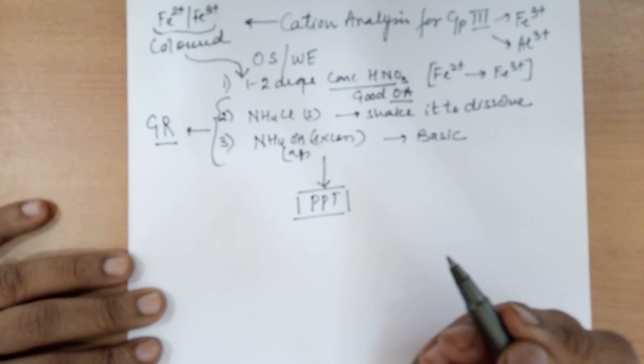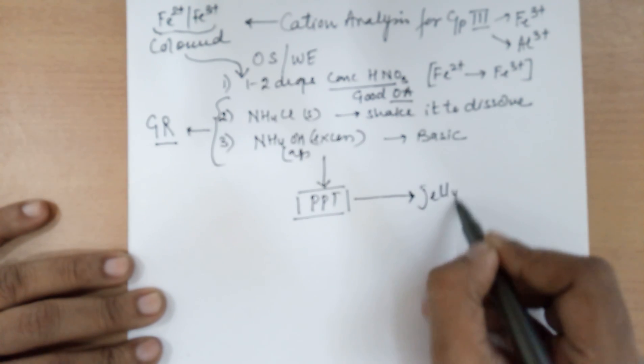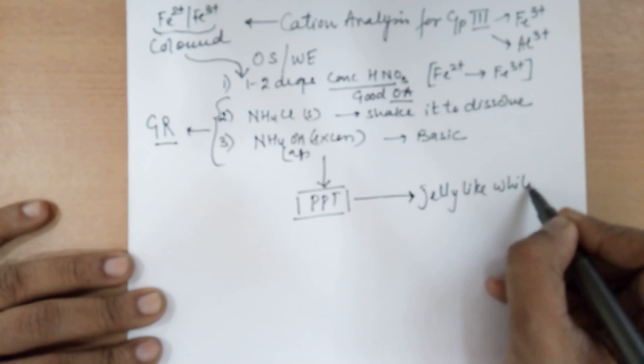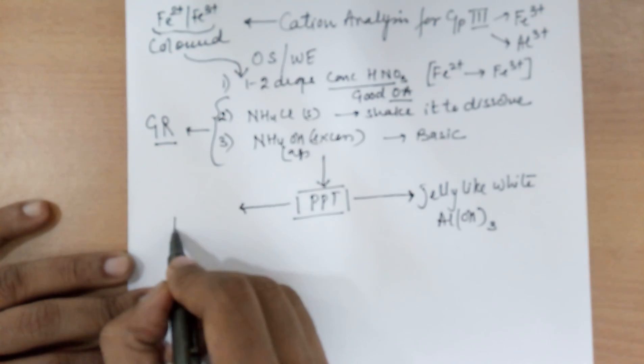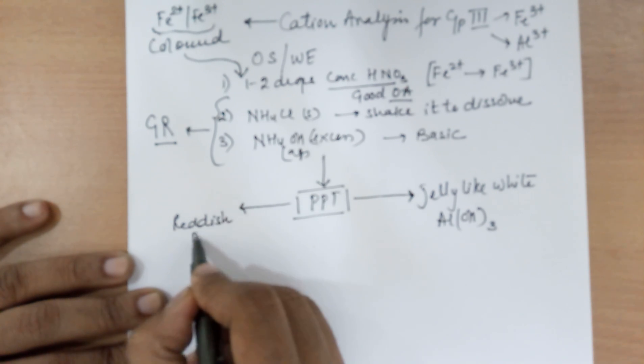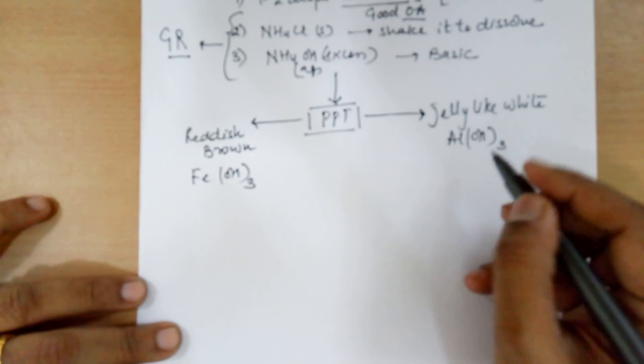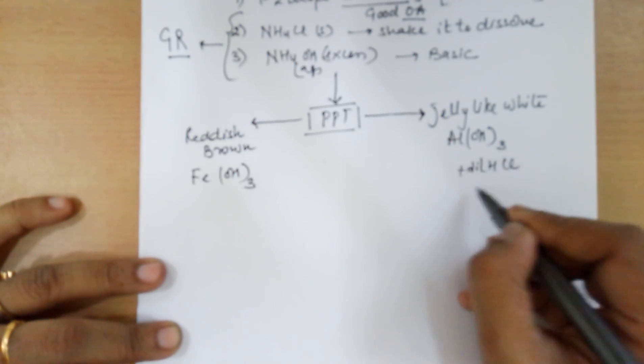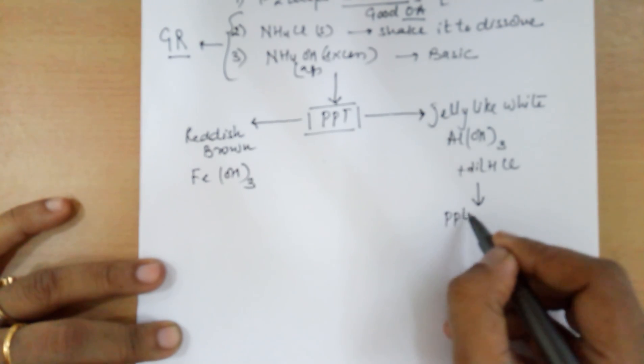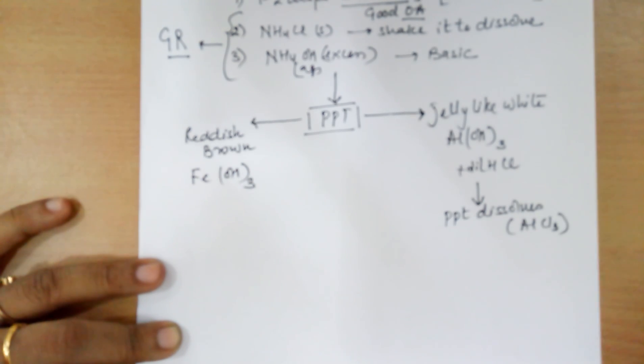And that would confirm the presence of group 3 cations. The PPT could either be jelly-like white, which would be aluminium hydroxide's PPT, or it would be reddish brown, which would be ferric hydroxide. Next, under both the situations, the further method is add dilute HCl. The PPT dissolves. It is understandable that it would lead to the formation of aluminium chloride.